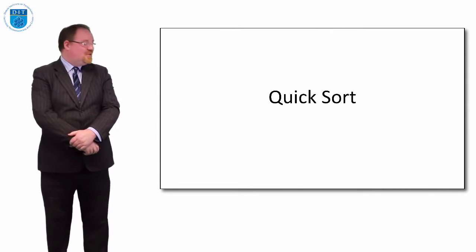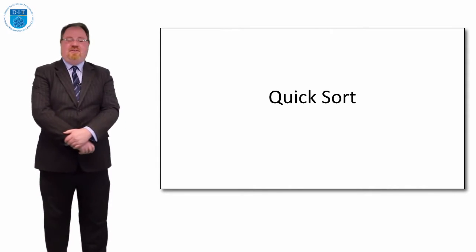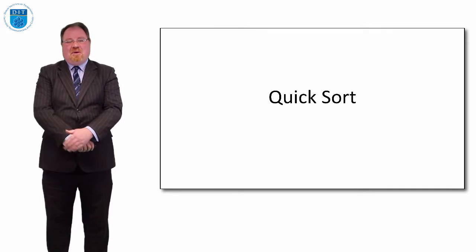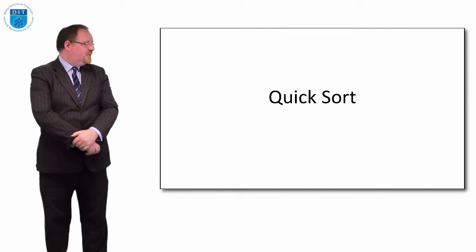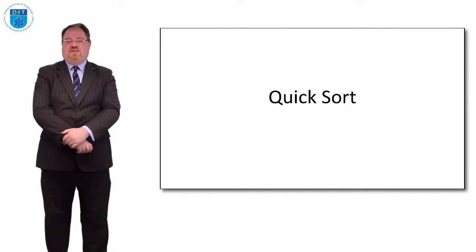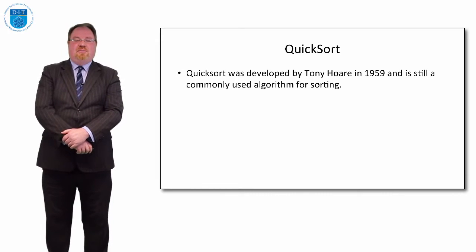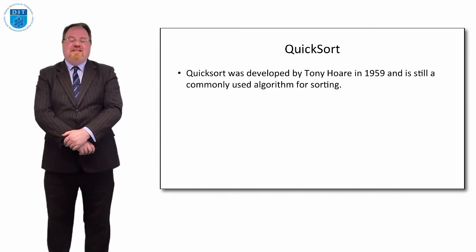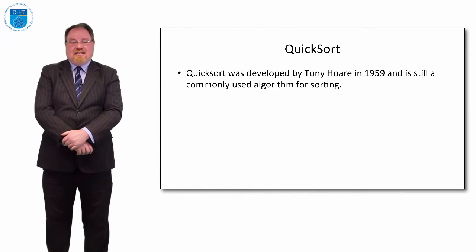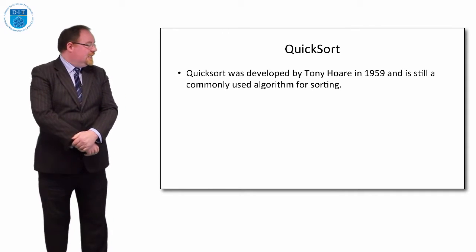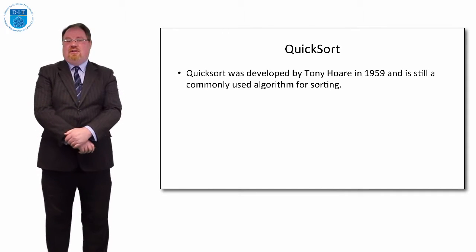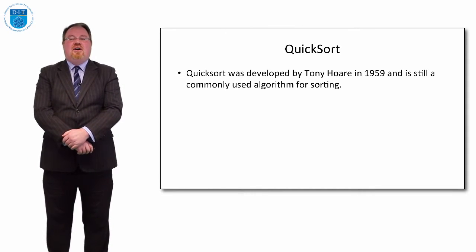Hello everybody, you're very welcome to this episode of programming and algorithms. In this episode we're going to look at probably what is one of our most advanced sorting algorithms and it's called Quicksort. Quicksort was developed by Tony Hoare in 1959 and it's still extremely commonly used in most operating systems, in games, in accounting packages — all around the world you see Quicksort being implemented.